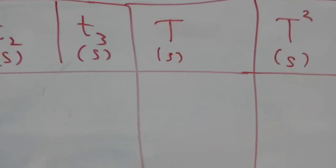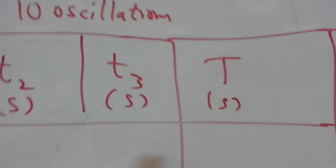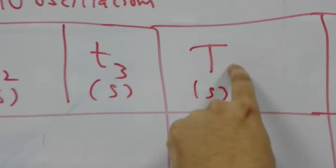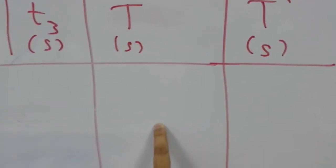This is the time for 10 oscillations. When you take the mean and divide it by 10, you get the time for one oscillation. Then you square that. This column is just the square of this.